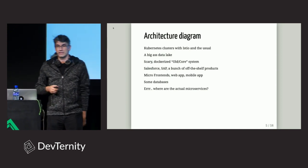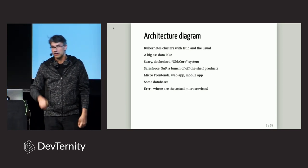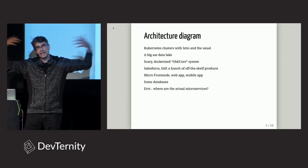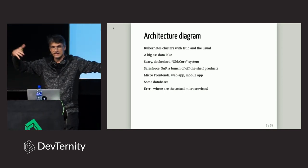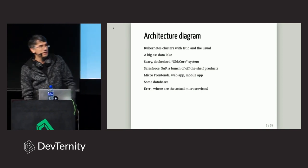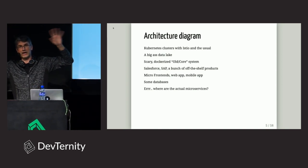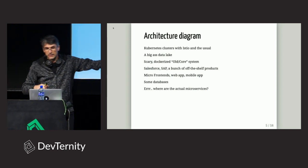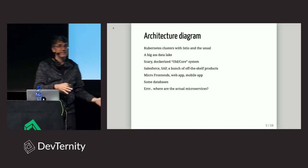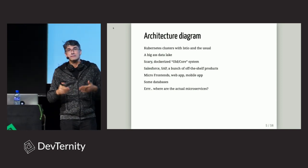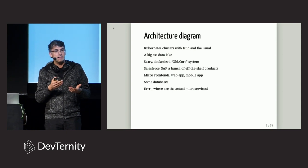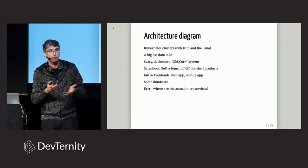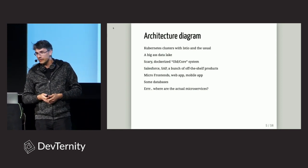There is a Kubernetes cluster on one side, maybe another one there. There is Istio, a big data lake at the bottom. There is a scary old system called Legacy or Old Core or something like that. There is a bunch of off-the-shelf boxed solutions all around it. Then there are micro frontends, web app, mobile app, some databases perhaps. And, well, that's cool.